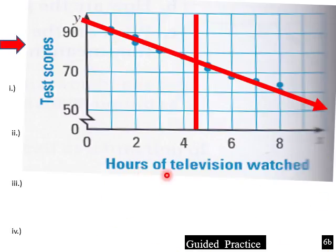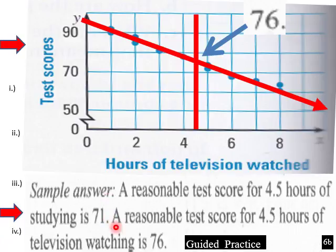And then for hours of TV watched, test scores. So four and a half hours of TV watched. Our test scores are actually higher if you watch four and a half hours of TV versus four and a half hours of studying. So what does that mean? A reasonable test score for four and a half hours of studying is 71. A reasonable test score for four and a half hours of TV is 76. So if you limit it to four and a half hours of TV, then that means that you're studying more rather than the other way around. If you limit your study time to four and a half hours, your score is lower.